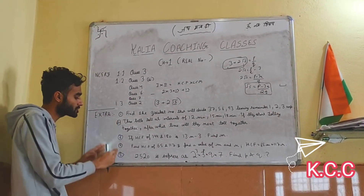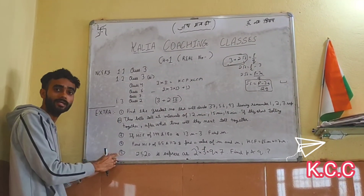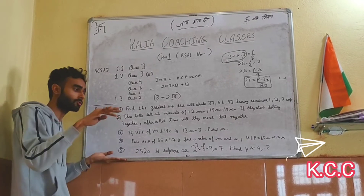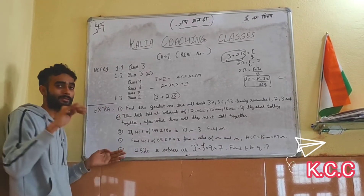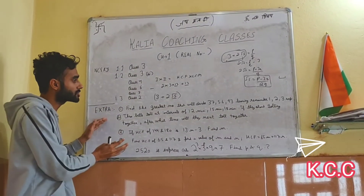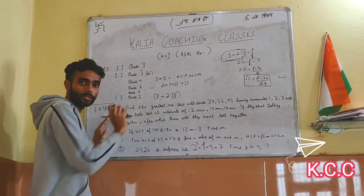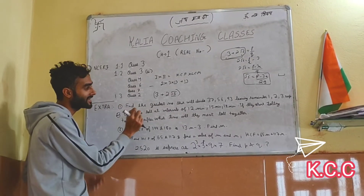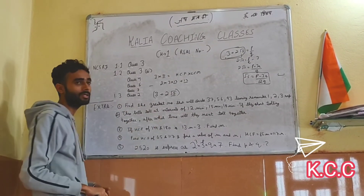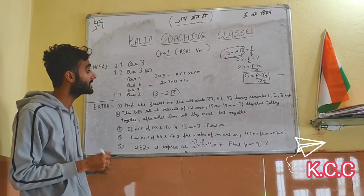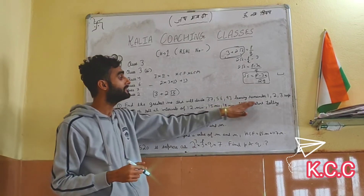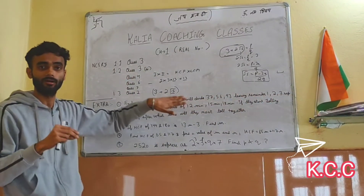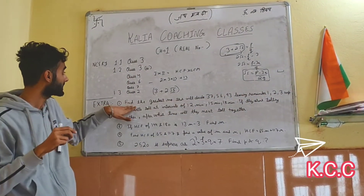Now, these are just 5 questions that we have written. If we do these questions, we will have a good grasp of the concept, and the level of questions in the series will improve. The first question is: find the greatest number that will divide 57, 56, and 93, leaving remainders 1, 2, and 3.